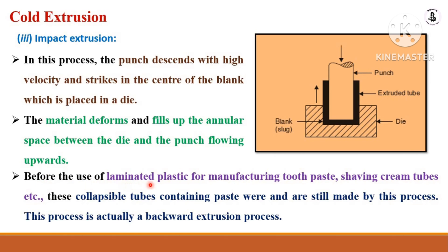Before the use of laminated plastic for manufacturing toothpaste and shaving cream tubes, these collapsible tubes were — and are still — made by this process. This process is actually a backward extrusion process because the extruded product and the applied force are in opposite directions.